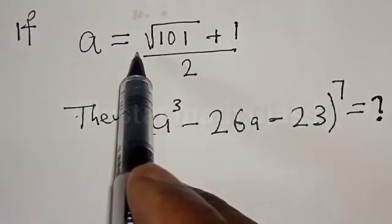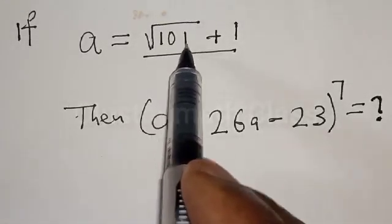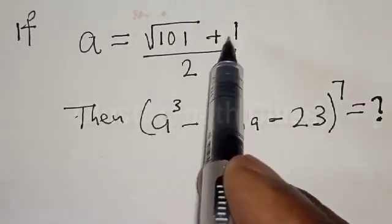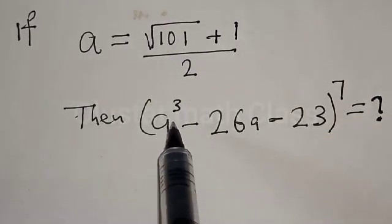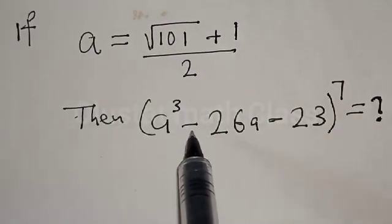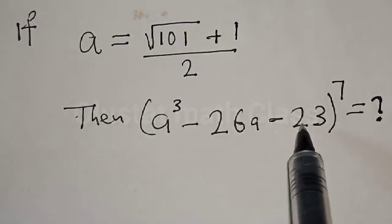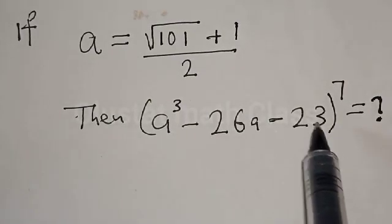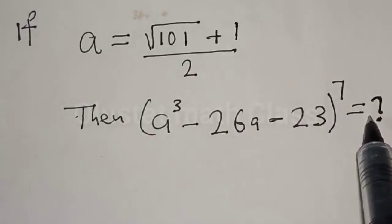If a is equal to square root of 101 plus 1 over 2, then a raised to power 3 minus 26a minus 23, all raised to power 7, is equal to what?